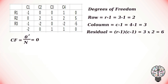Next, we have to find the correction factor. To find that, we first calculate the total for each row and the total for each column, then calculate the grand total. In our case, the grand total is 0, and the number of variables is equal to 12. With that, we can calculate our correction factor, which gives us 0.